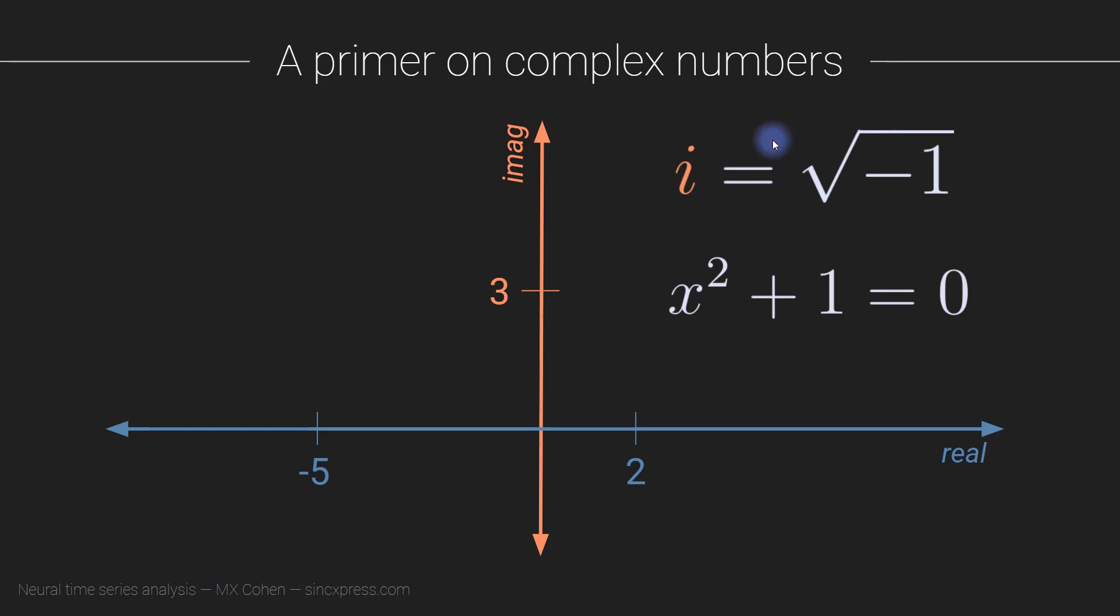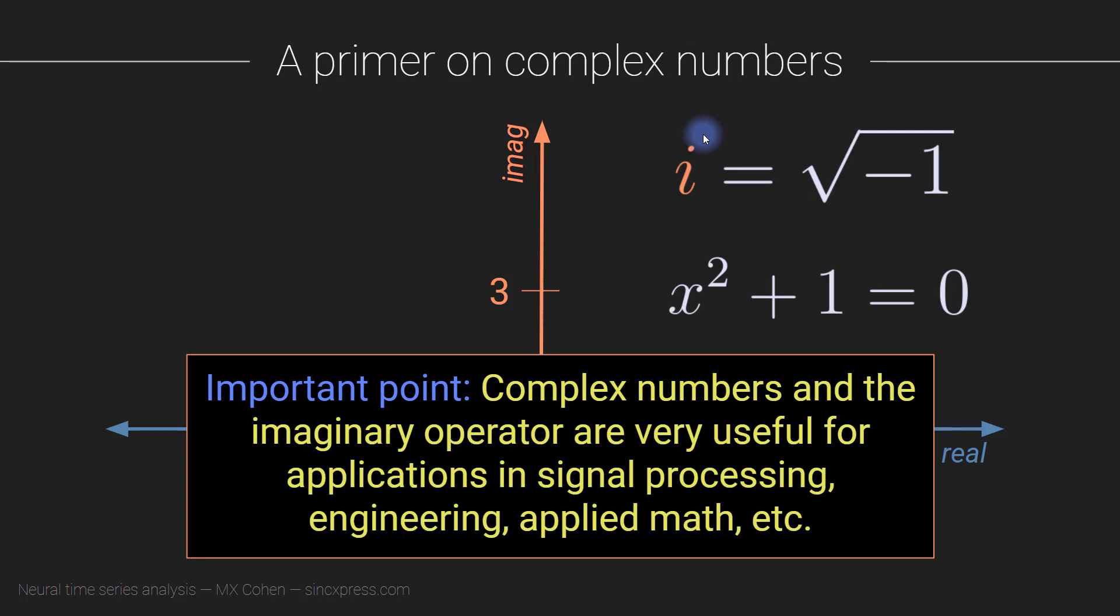Now, complex numbers are a little bit weird. They're weird to think about. It's kind of a funny concept. But don't lose sleep over what complex numbers mean, what the imaginary operator means, how exactly to interpret this quantity, whether intelligent life elsewhere in the universe also developed a system of complex numbers. You don't need to worry about any of that. All you need to be concerned with is that complex numbers and the imaginary operator are very useful for applications in signal processing, engineering, applied math, physics, and so on. So don't worry about the meaning of complex numbers. You can just be concerned with their use, their applicability.